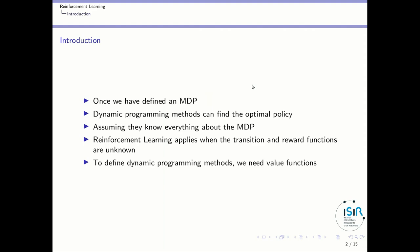Welcome to this class about dynamic programming. In a previous class, I defined Markov decision processes, or MDPs, as a context where an agent is interacting with an environment and is looking for the optimal policy in this environment. Dynamic programming methods are methods to find this optimal policy. To use dynamic programming methods, you have to assume that the agent knows everything about the MDP — in particular, it knows the transition and reward function.